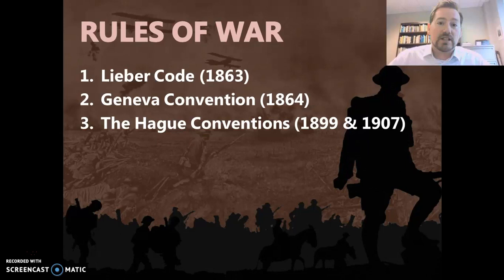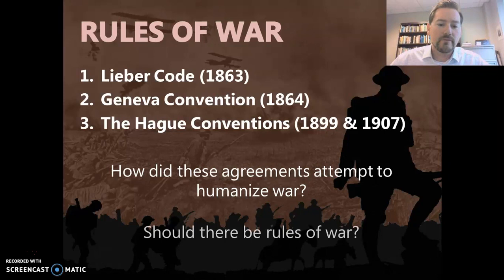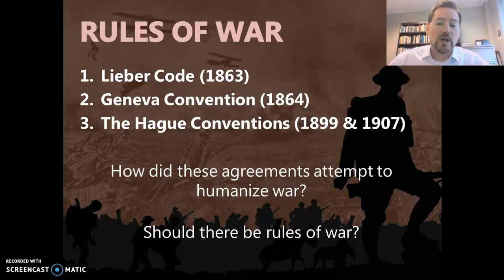Some questions to be thinking about: How do these agreements attempt to humanize war? Should there be rules of war? One of the things you'll notice as you go through these documents is that the rules of war become more specific over time. And then, once we look at the First World War — and the Second World War too — when we get to 1914 and the war begins, you're going to see a lot of these rules not being followed. So is there any point in even having them if no one's really going to follow them?